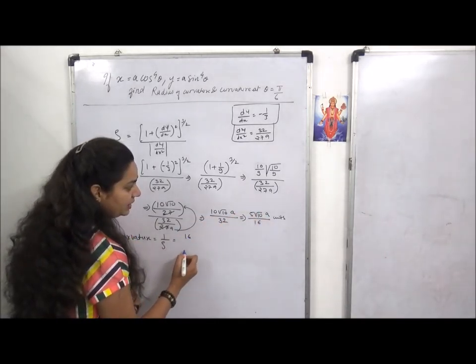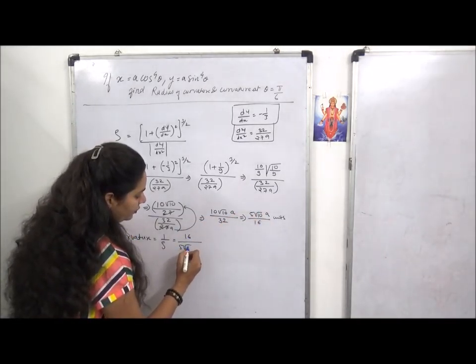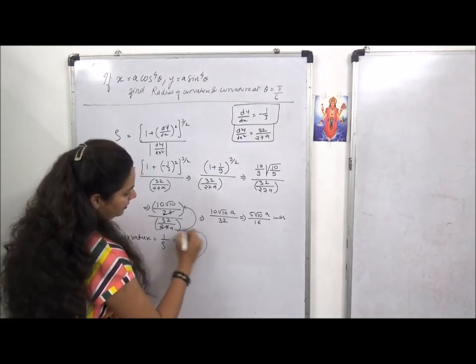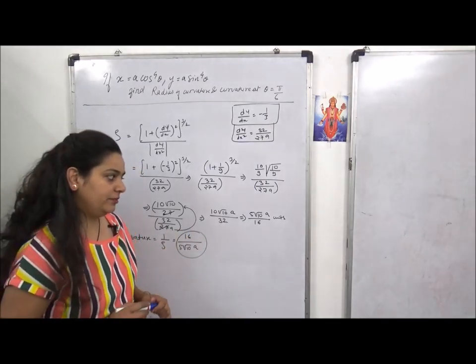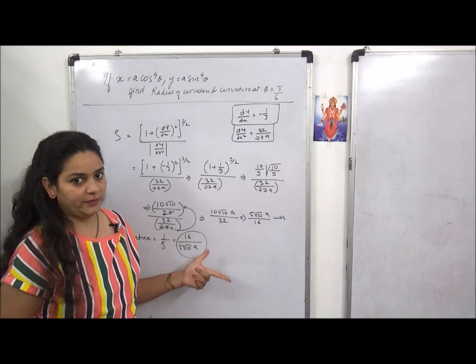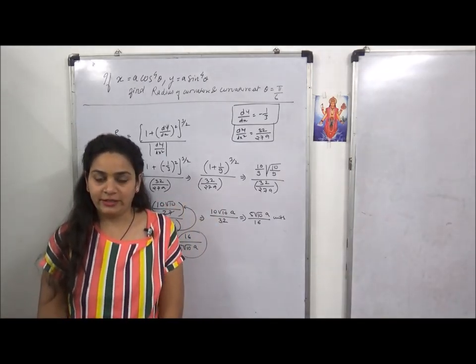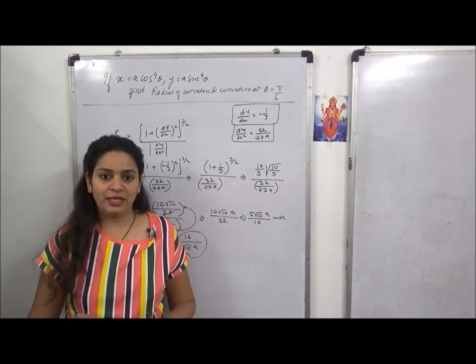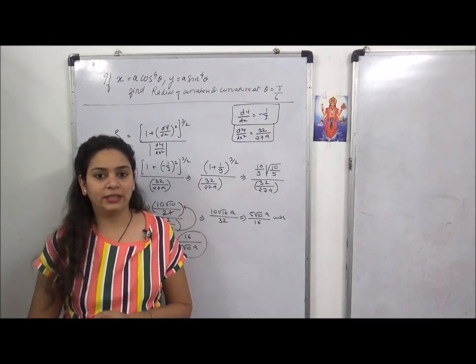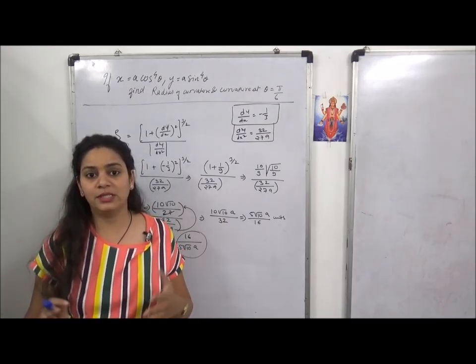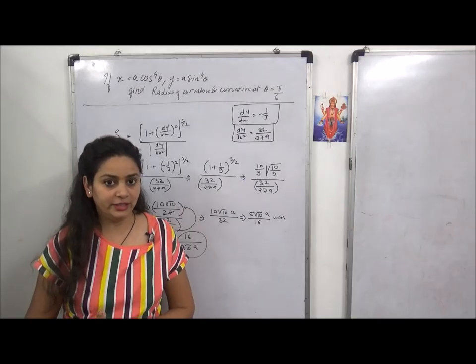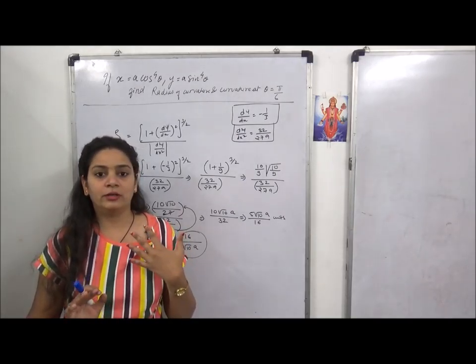If we're told to find curvature also, I explained that curvature is given by one upon rho, the reciprocal of radius of curvature. Taking reciprocal means 16 goes to numerator and 5 root 10a to denominator. This becomes our final answer - 16 upon 5 root 10a.